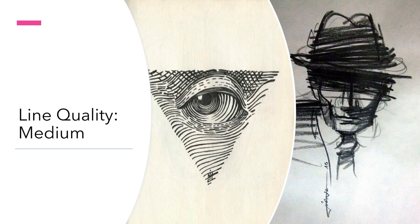Line quality number four relies on medium. When artists and designers use the word medium or media, you really have to pay attention to your context clues, because media here is the plural of medium and refers to the materials used — not social media or the news. The media used to create lines can directly impact the effects and character of the images they create.